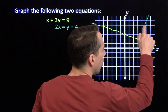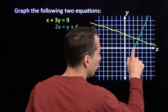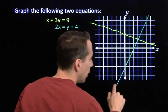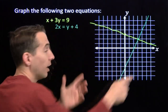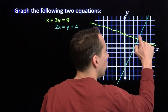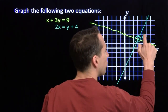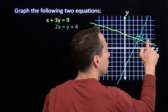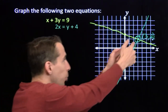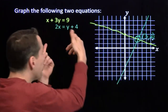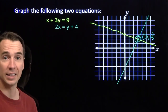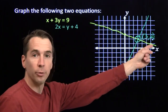Now we have our green line. We see that these two lines have one point in common — these two lines intersect right here at the point (3, 2). And that tells us that x equals 3, y equals 2 satisfies both of these equations. So if we solve this as a system of equations, we should get (3, 2).